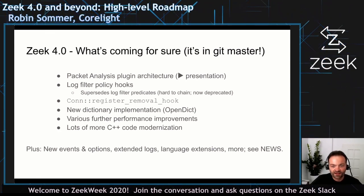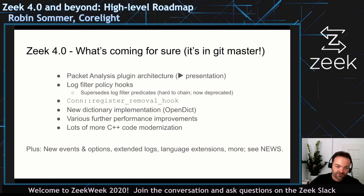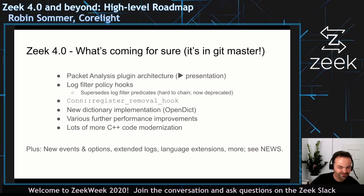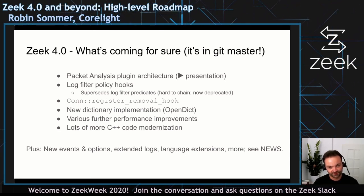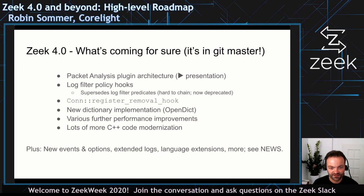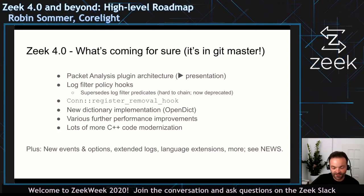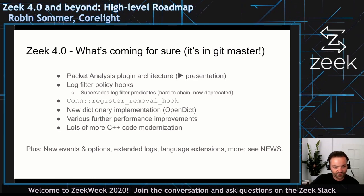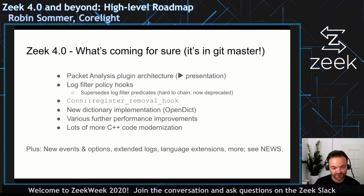We have new log filter policy hooks, which supersede the log filter predicates and make it easier to filter logs. We have a new state management tool for hooking into connection state removal — but not for all connections, just for some — which you can now individually register, helping performance when you're only interested in cleaning up for a few connections. We have a new dictionary implementation under the hood, which was an external contribution. There are further performance improvements and lots more C++ code modernization.